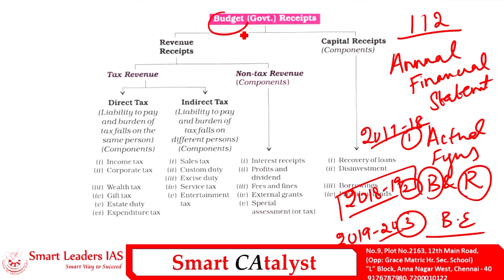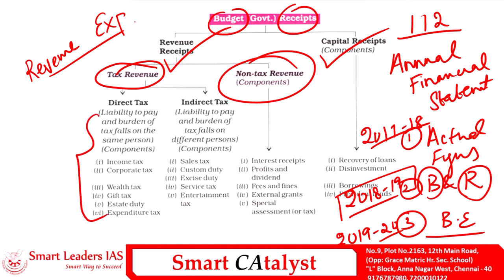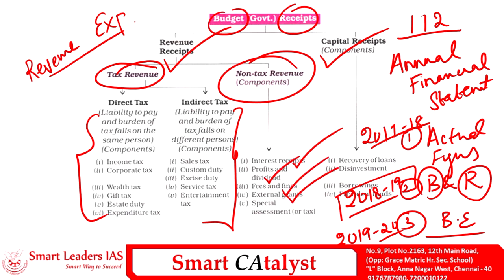The budget can be broadly classified into two parts: the revenue part and the expenditure part. The receipts part consists of two components — revenue and capital. The revenue component is broadly classified into tax and non-tax sides. The non-tax revenue component is constituted by interest payments, profits and dividends, grants, fees, and fines. The capital receipts part consists of disinvestment, recovery of loans, borrowings, and provident funds.